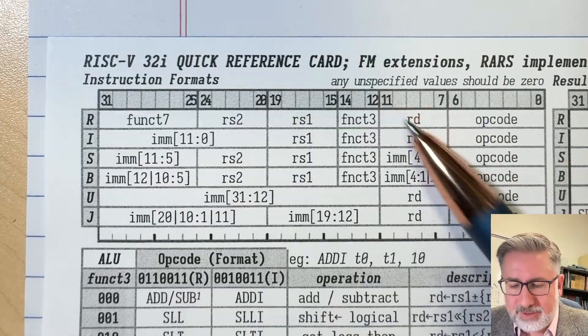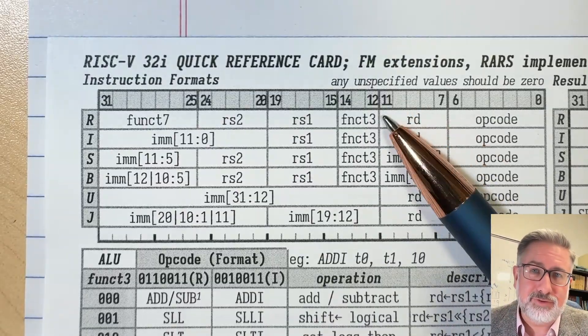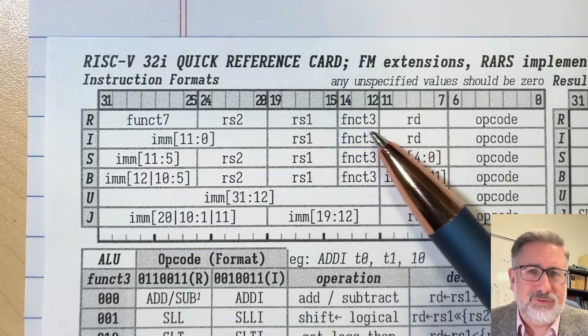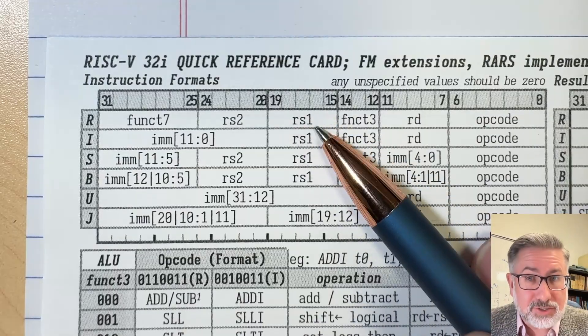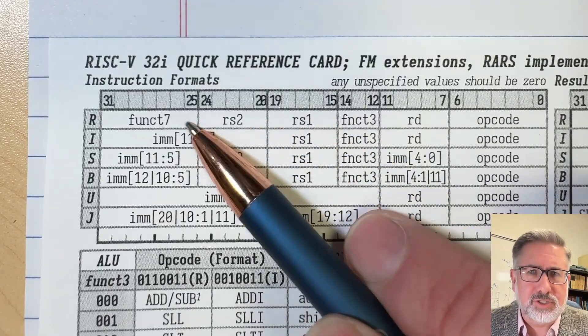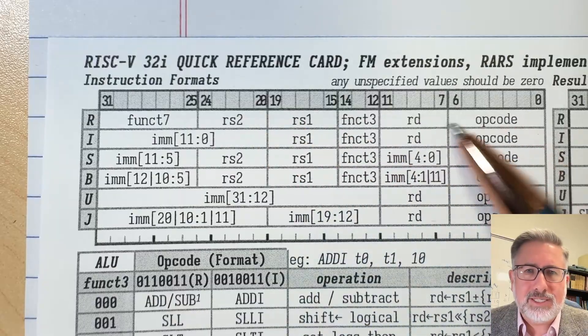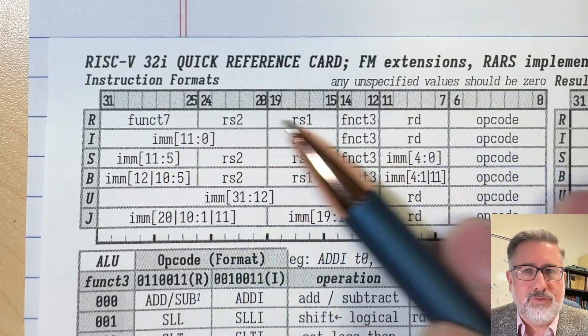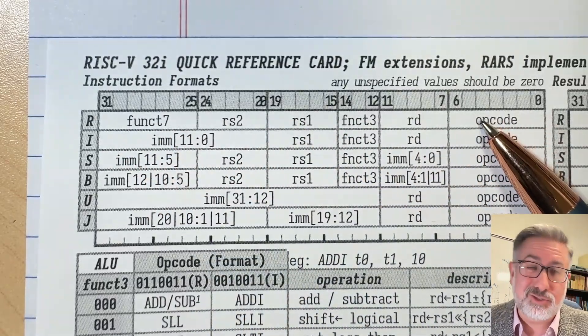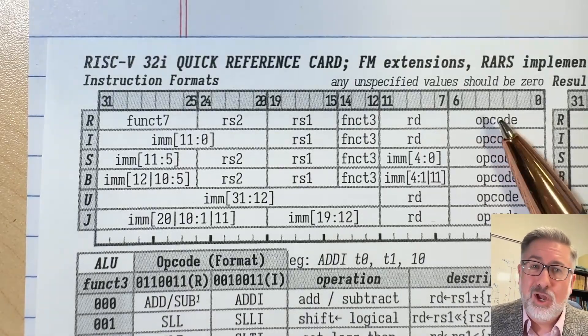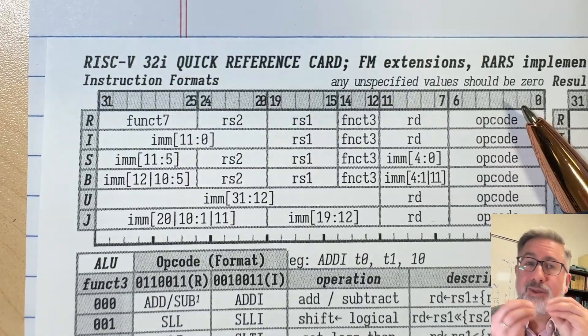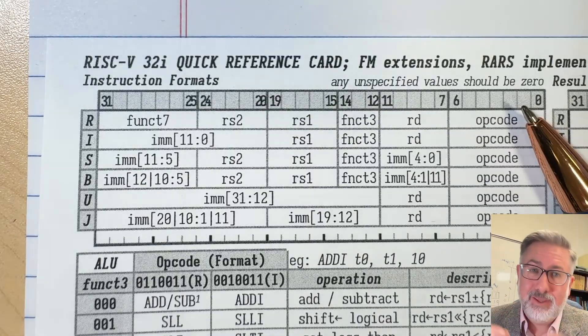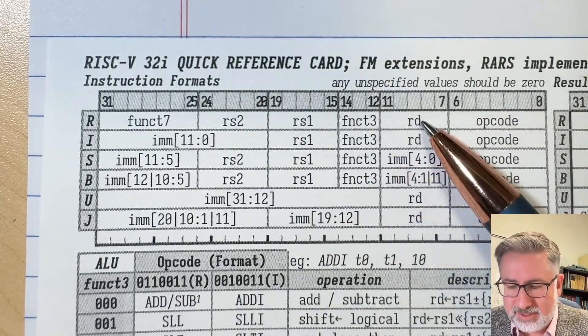Then we have the destination register in bits 7 through 11. Then we have a function code of some kind. And then we have a source register and then another source register and some other function code. So basically what we've got for the very easiest kind of instruction to understand, the R-type or register instructions, where you're just taking two numbers from the register file, doing something to them, and then putting them back in the register file, you need those three registers - destination, one source, and another source.